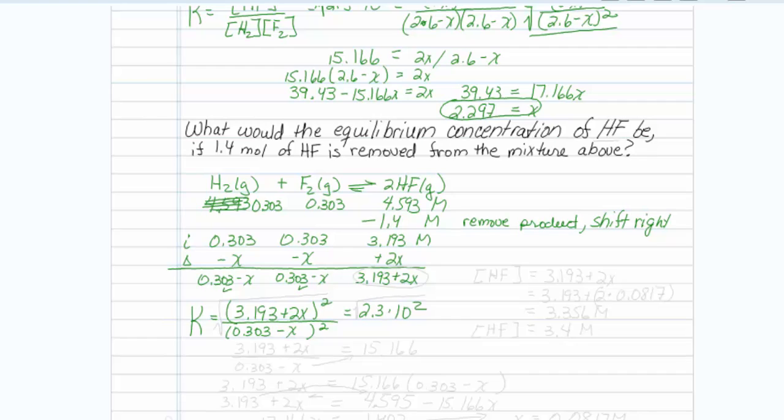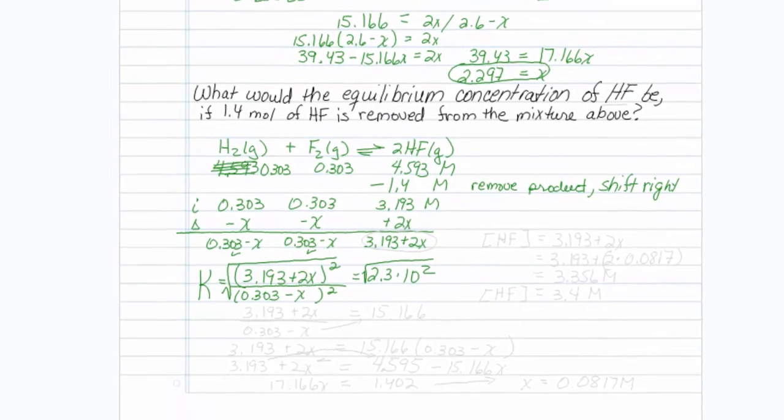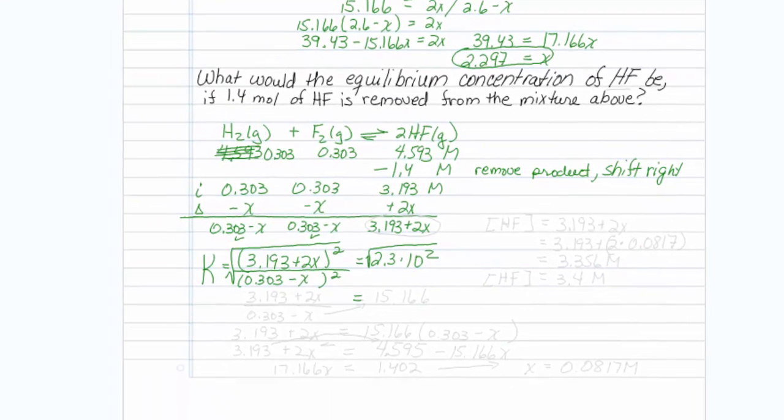Once again, it will serve me best if I take the square root of both sides. So I've already solved for my square root of 230. I know that is 15.166, and on the left side, I have 3.193 plus 2x, and on the bottom I have 0.303 minus x.